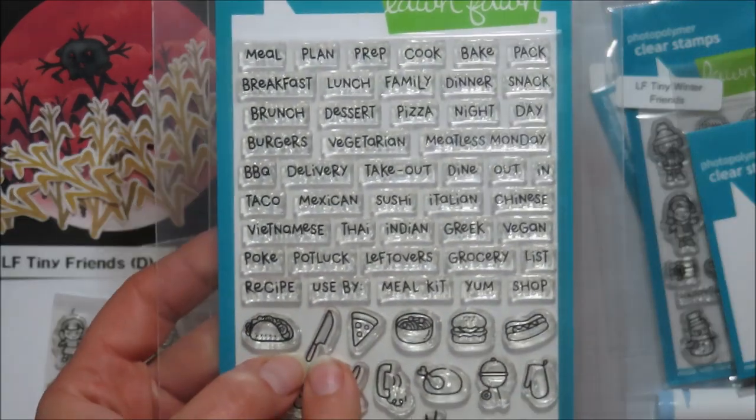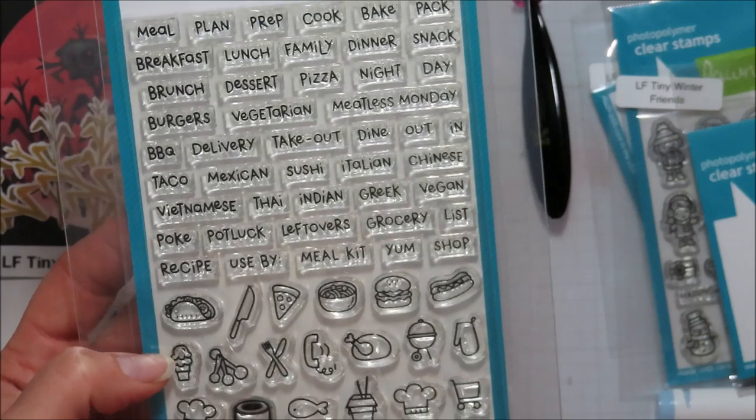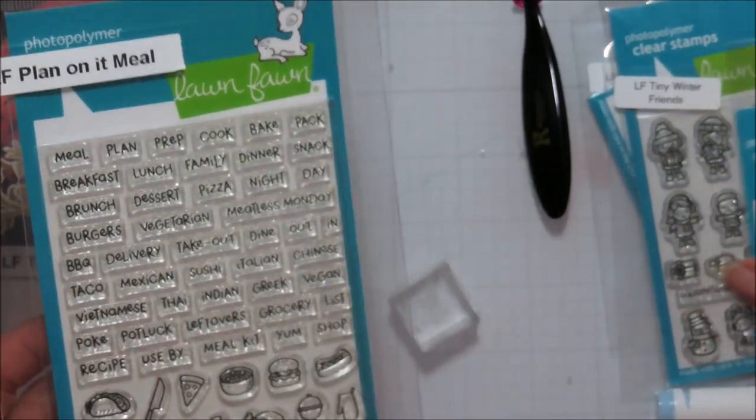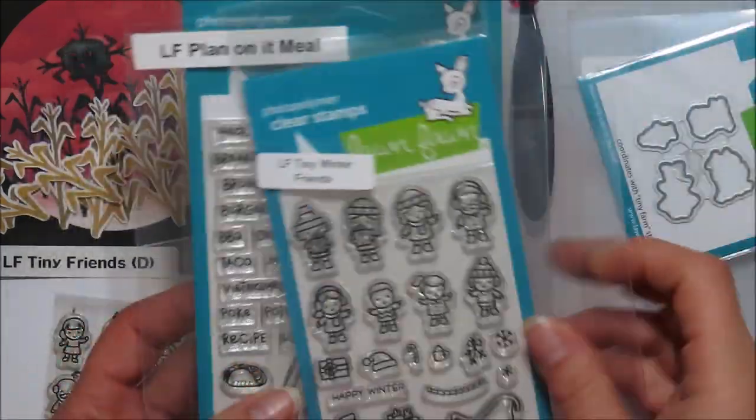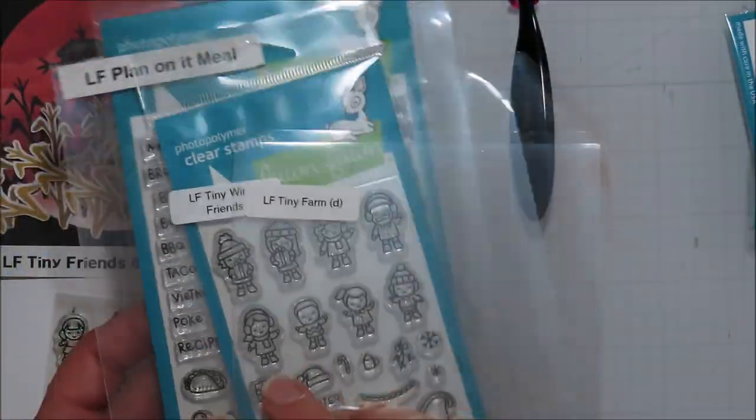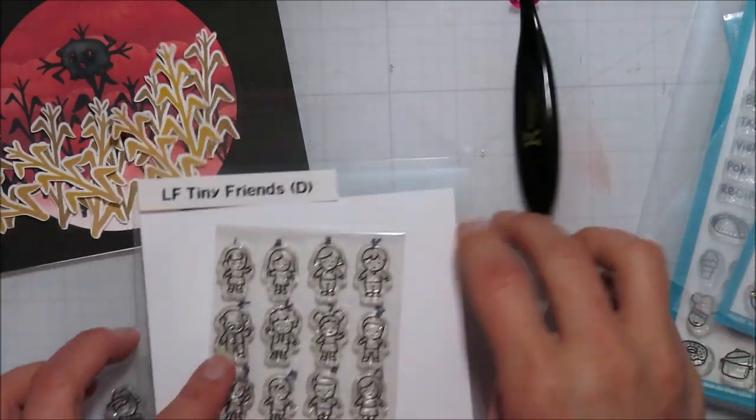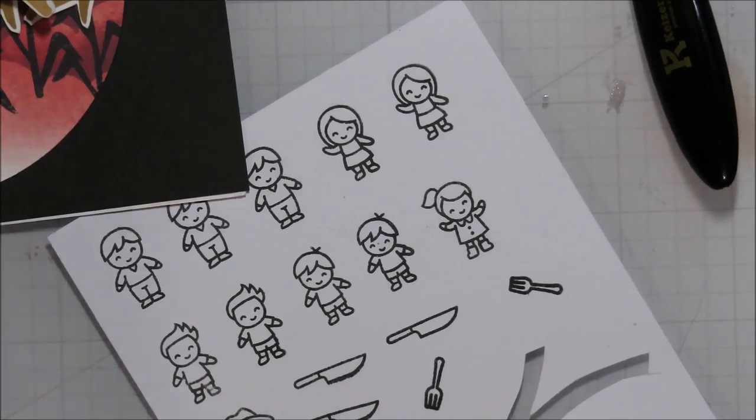So I'm using the tiny friends, the tiny farm, and then I'm going to use the plan on it. I needed that knife from in there. And then I will pull in the fork from, I want to say it is the new tea set. I can't remember offhand. I pulled in a fork from one of the Lawn Fawn sets. I'm pretty sure it's that one.